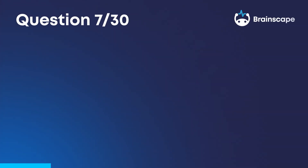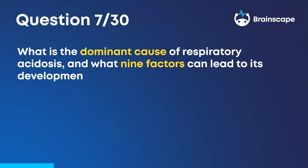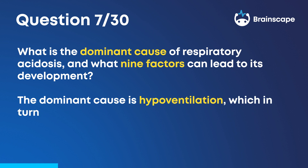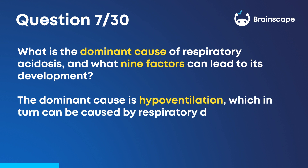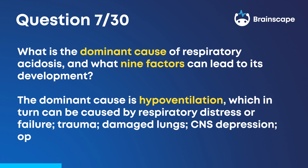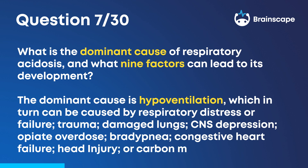Question 7. What is the dominant cause of respiratory acidosis and what nine factors can lead to its development? The dominant cause is hypoventilation, which in turn can be caused by respiratory distress or failure, trauma, damaged lungs, CNS depression, opiate overdose, bradypnea, congestive heart failure, head injury, or carbon monoxide poisoning.